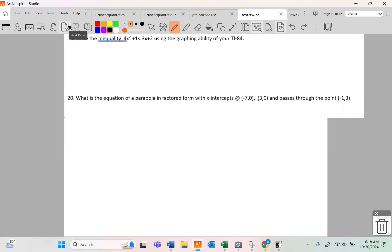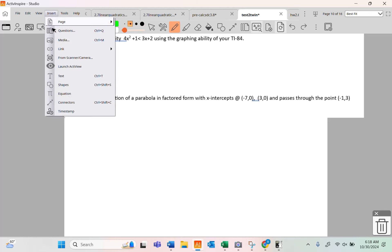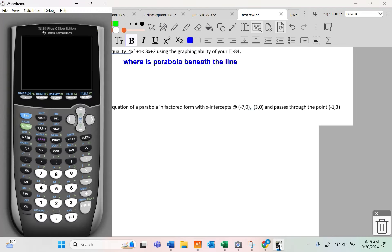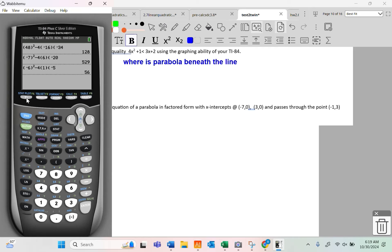All right, moving forward. 19. Solve the inequality using the graphing ability of your TI-84. Now let's look at the context of this question. We should know that x squared is a parabola and that 3x plus 2 is a line. Actually we shouldn't, we do know. Like, how did you get to algebra 2? There's a less than symbol. It's saying, where is the parabola beneath the line? That's what it's saying.